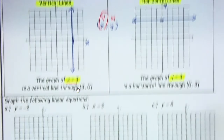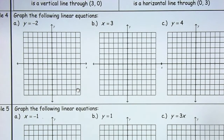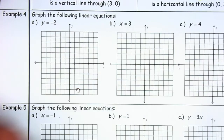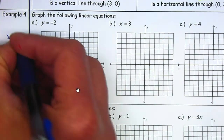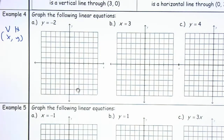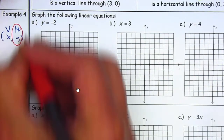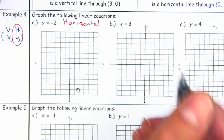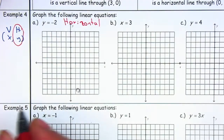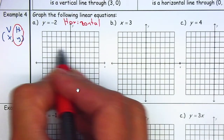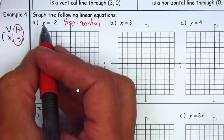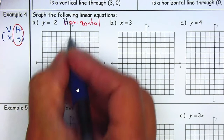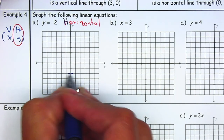Let's go through example number 4 together. We're going to graph the following equations. As soon as I see y is equal to negative 2, I write down x, y, Van Helsing. Since y is equal to a number, we know it's going to be horizontal — write down horizontal. Remember, horizontal is like your horizon, it goes from side to side. It has to cross the y-axis at negative 2, so we count down to negative 2 and then expand it.